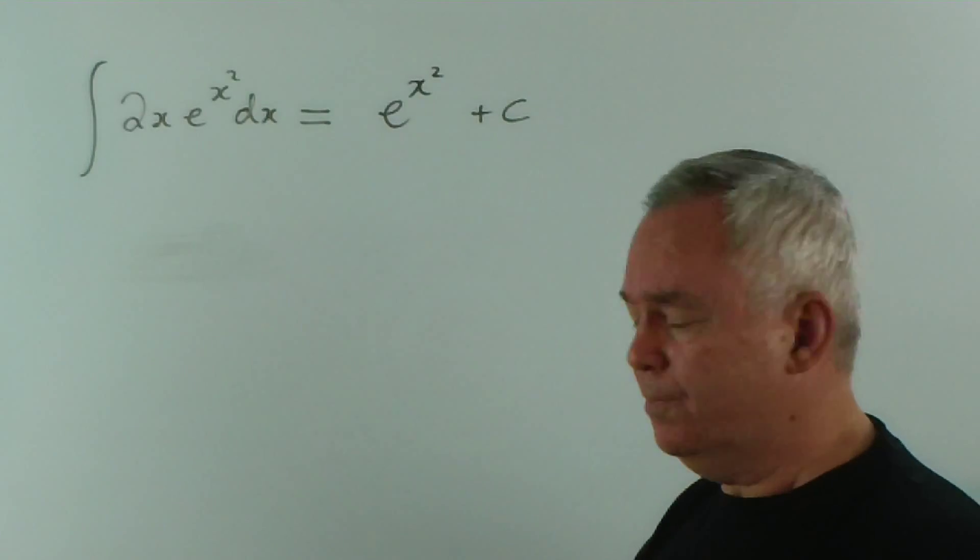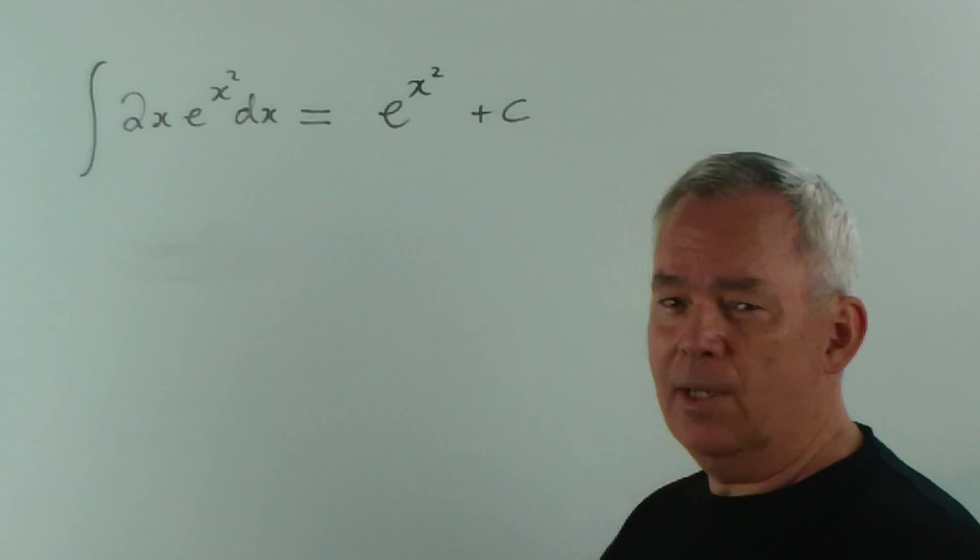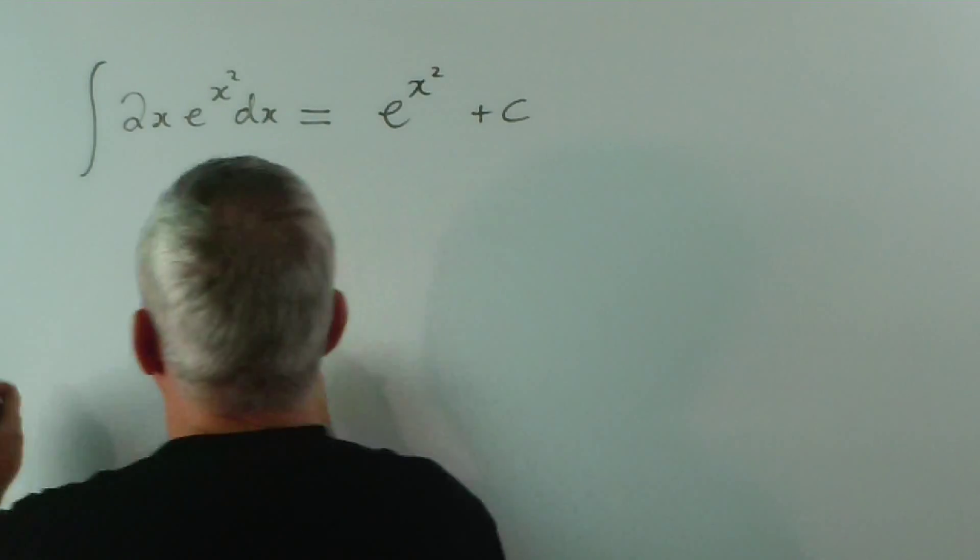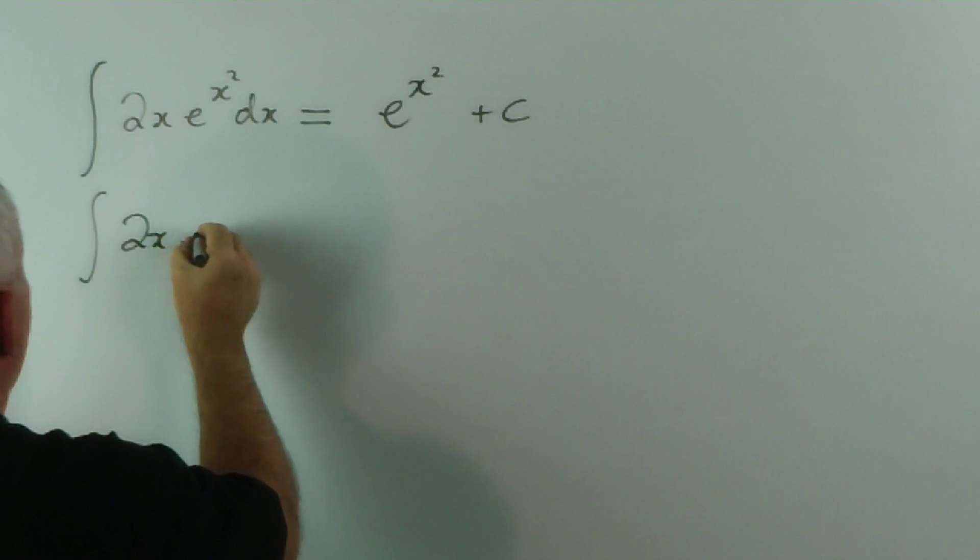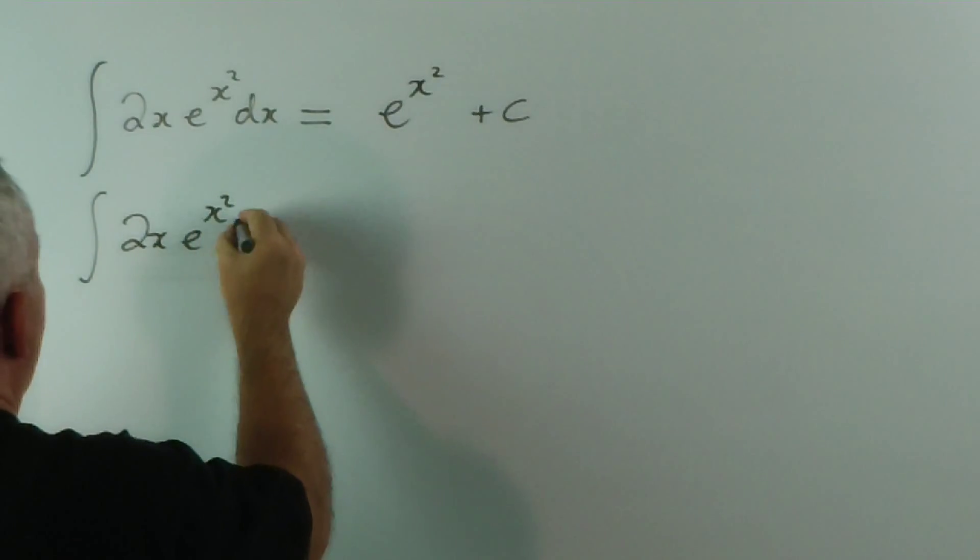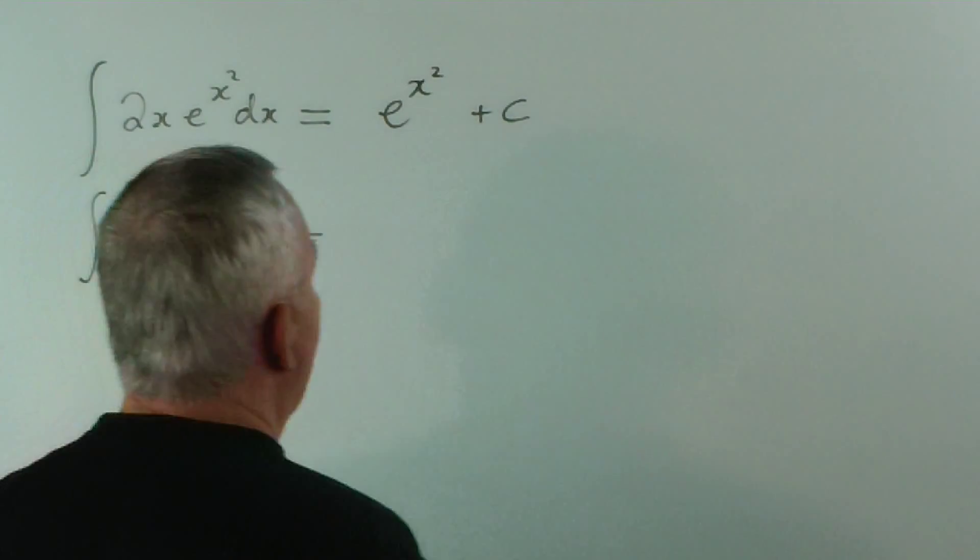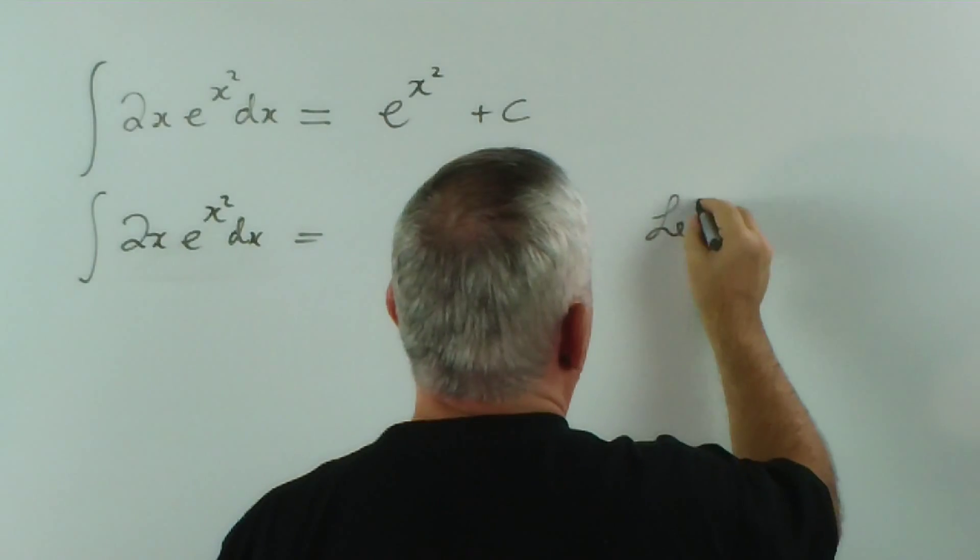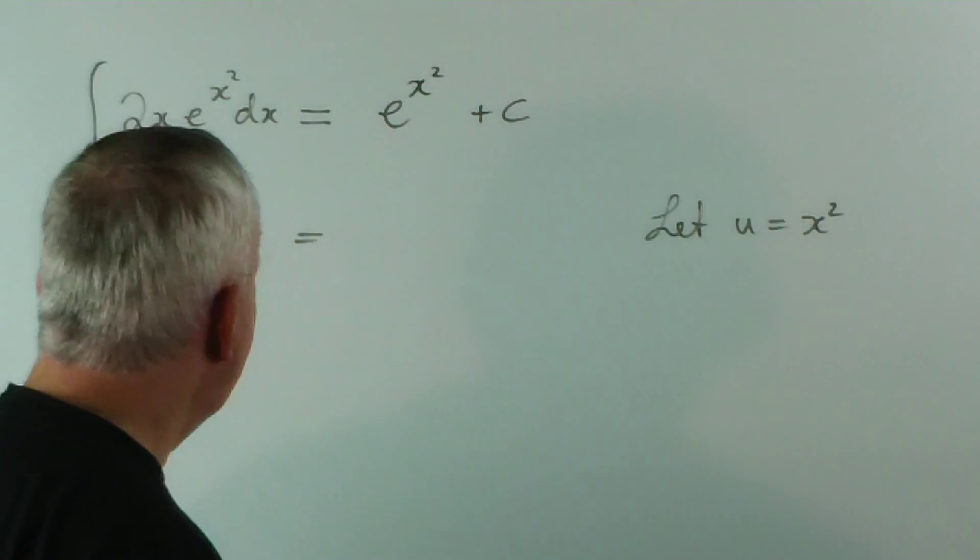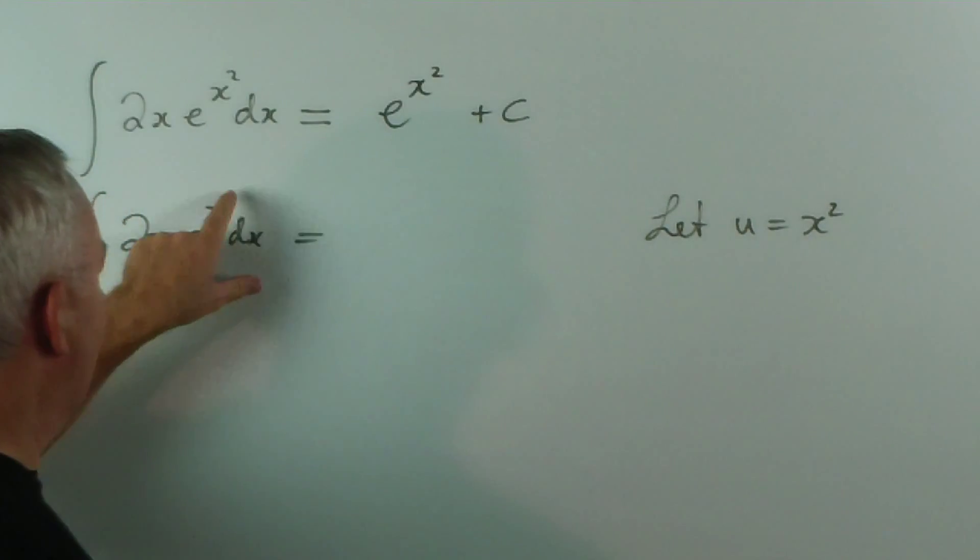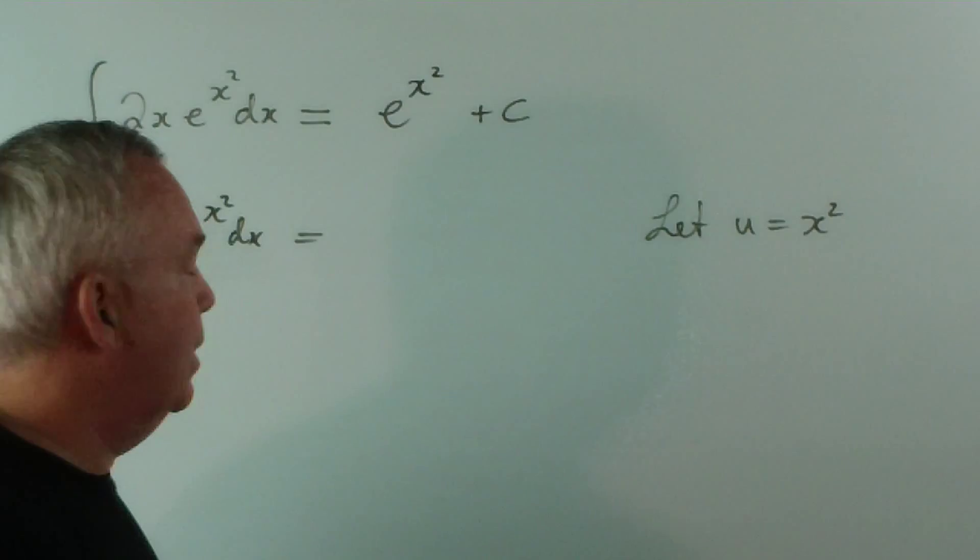Let's do this by substitution, which, by the way, was the way I was taught at school. So we'll write it out again: 2x e to the x squared dx equals... And we would let u equal x squared, because that's the complicating factor. If this was just e to some pronumeral, that would be simpler.